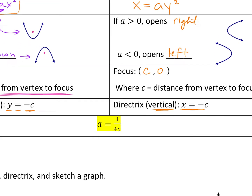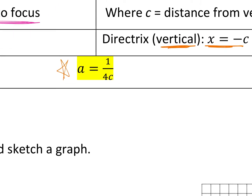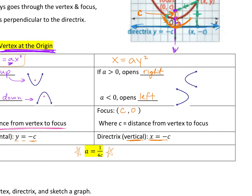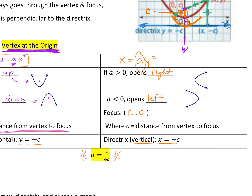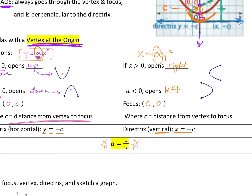This is the most important formula in this whole thing, because you will use it every single time. Your a value — remember the a value is the one in y equals ax squared or x equals ay squared — that a value will always equal 1 divided by 4 times C. One over 4C is always going to be your a value. Super important equation.